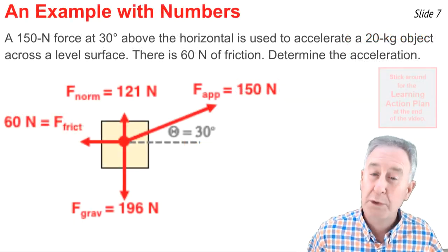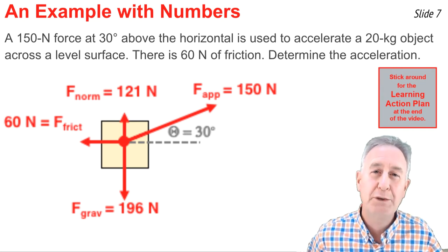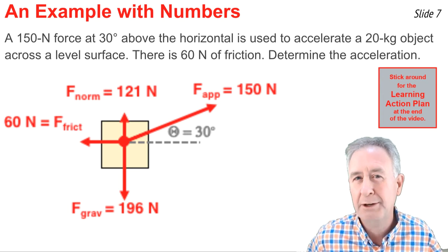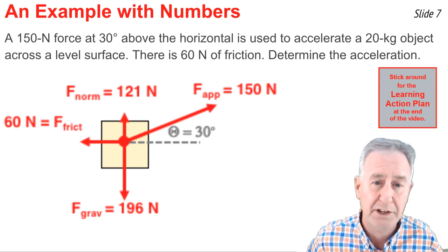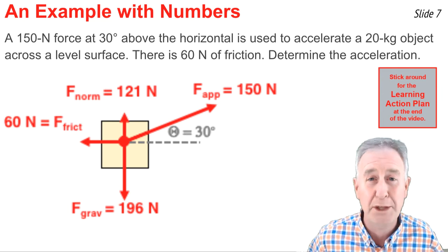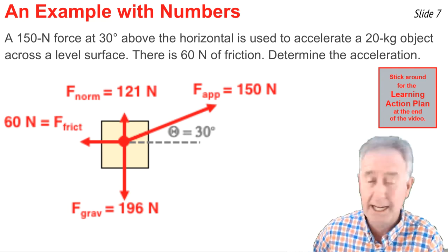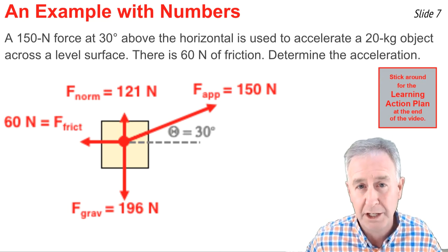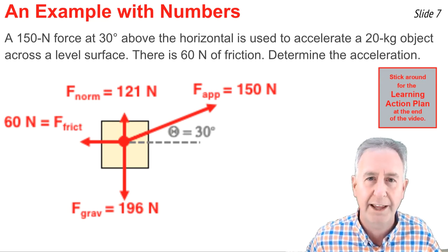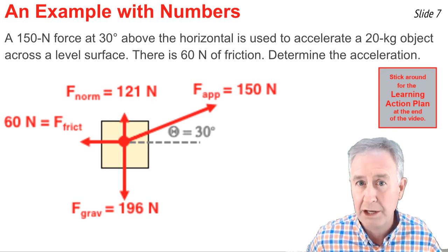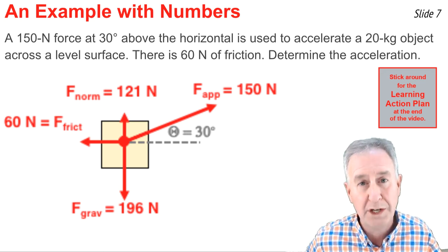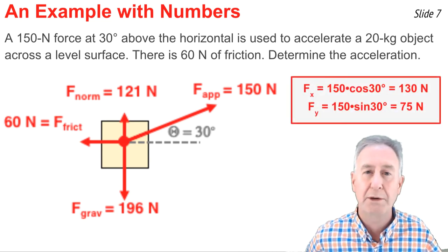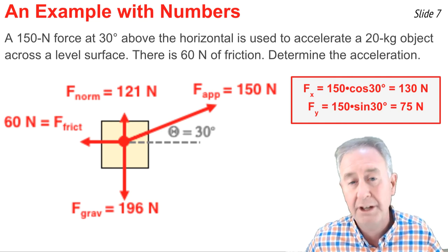It's time to try an example with some numbers, like this one. A 150 newton force is applied 30 degrees above the horizontal to accelerate a 20 kilogram object across a level surface. The friction force is 60 newtons. Determine the acceleration. The free body diagram is drawn for me. My first step is to take this 150 newtons at 30 degrees and resolve it into Fx and Fy. So to do so, I need my equations: Fx equals F times cosine of theta and Fy equals F times the sine of theta. And I substitute in 150 for F and 30 degrees for theta.